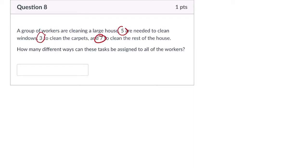How many different ways can these tasks be assigned to all the workers? Well, with 15 people being sorted into different ways of working, if there were 15 different jobs, it would be 15 factorial.